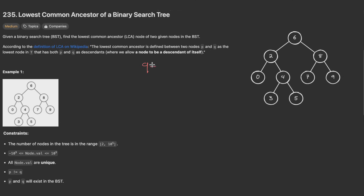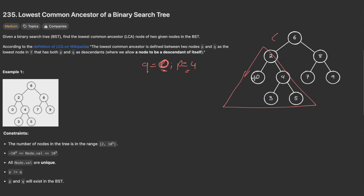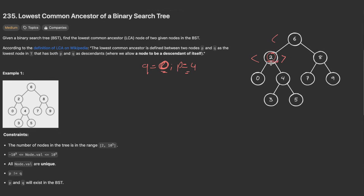Let's look at the intuition. Say q equals zero and p equals four. Both zero and four are less than six, so we search the left subtree. We go down to the node with value two and check: zero is less than two, but four is greater than two. So two is automatically the lowest common ancestor of these two inputs.